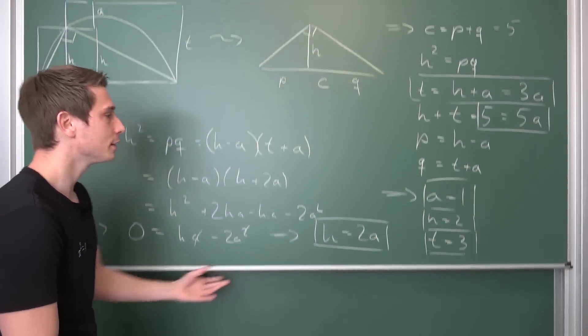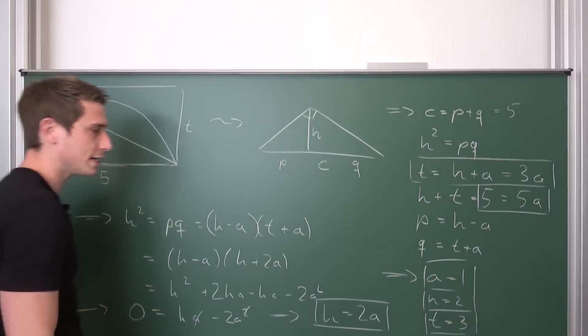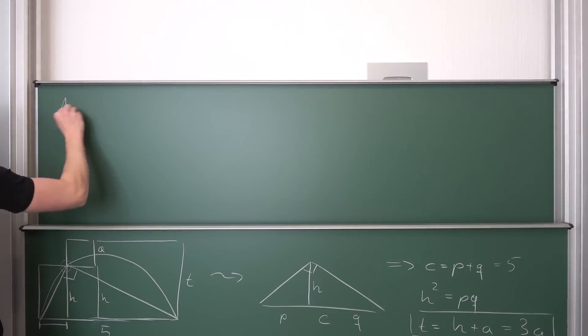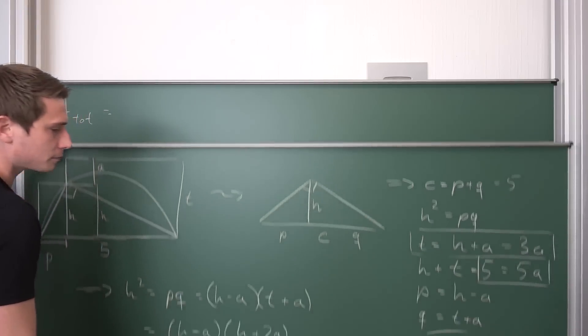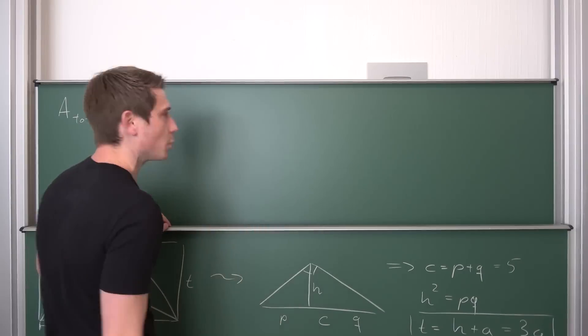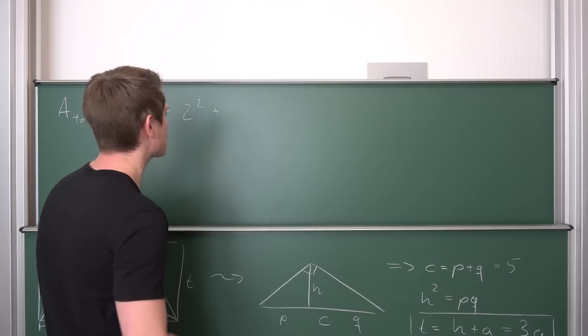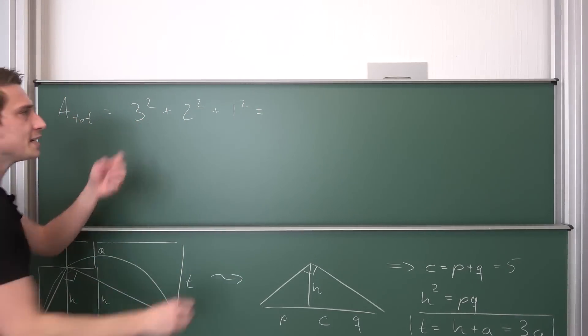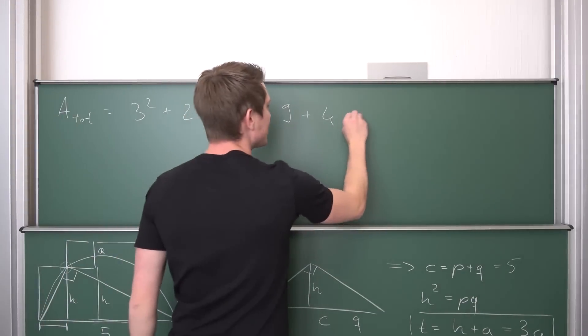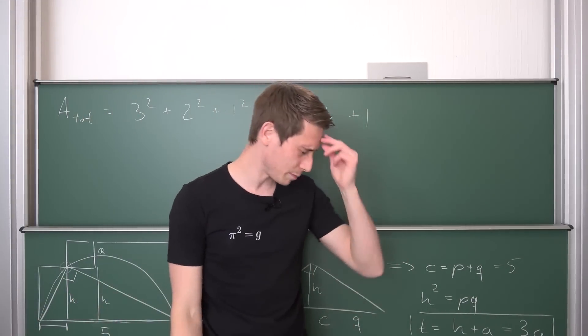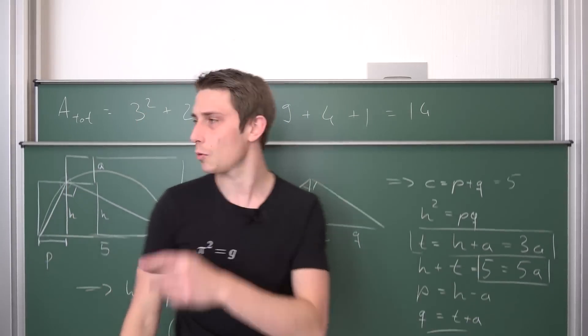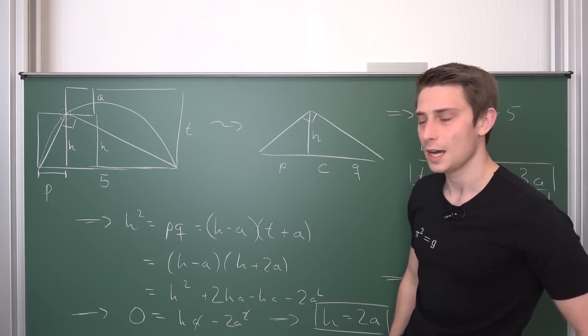Now we have the base and height of each and every square. We can actually compute the total area. Area total is 3 squared plus 2 squared plus 1 squared. This makes 9 plus 4 plus 1, which equals 14. So the total area of what we have here is 14.